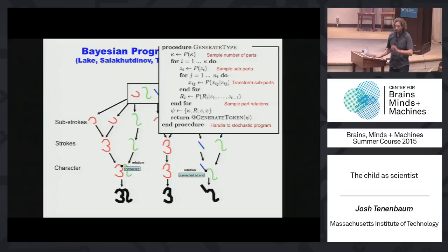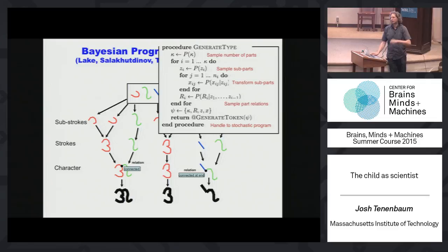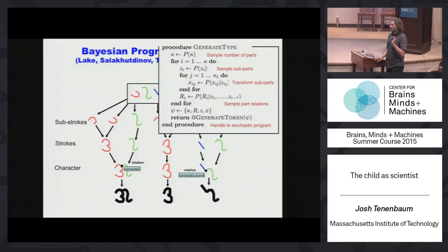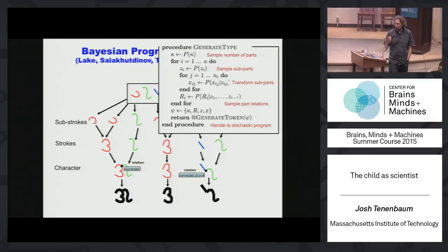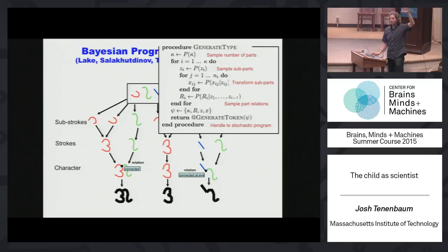We think that when you see these characters and many other concepts, you represent something about how you might create it — but it doesn't mean it's in your muscles. You could use other hands, your toe, or just think about it in your imagination. The model induces these simple hierarchical plans, simple action programs, by having a program-generating program that can itself have parameters learned from data. There's a program called 'generate type' — a type means a character concept. It's a program which generates a program that generates the actual character. The second level is called 'generate token,' which draws a particular instance.